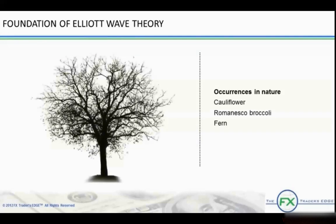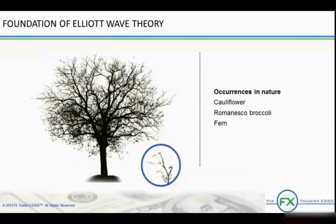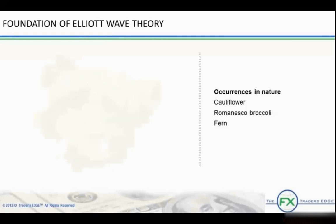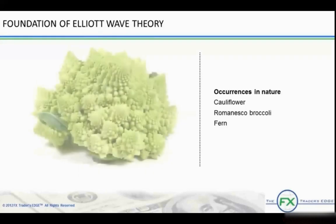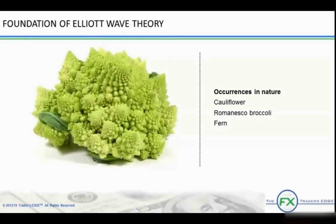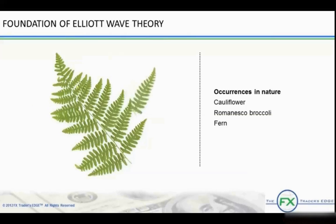A branch of a tree is often used as an example. The branch is similar to the whole tree, and if you break a twig off the branch, the twig is similar to the branch. In a true mathematical fractal, this scaling goes on forever. Fractals become clear when we look at occurrences in nature. Examples of fractals in nature are cauliflower, the Romanesco broccoli, and the fern.